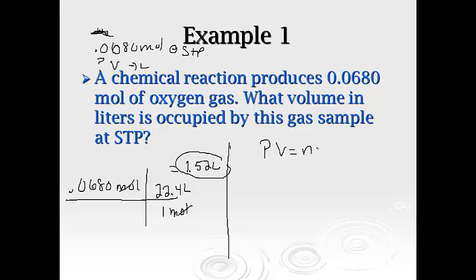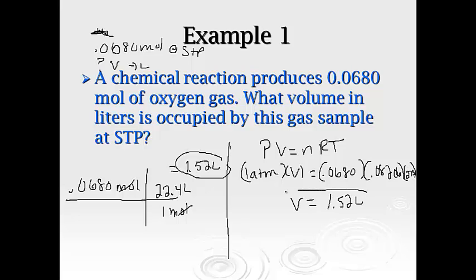If you didn't like that, you could just plug it in to PV equals NRT. Your pressure is going to be 1 atm. You'd be looking for the volume. Your moles, 0.0680. Your R value is still going to be the same 0.08206, and then your temperature would be 0 degrees Celsius at 273. If you solve for volume, you get 1.52 liters. So it doesn't matter which way you do it, but it's just a shortcut.